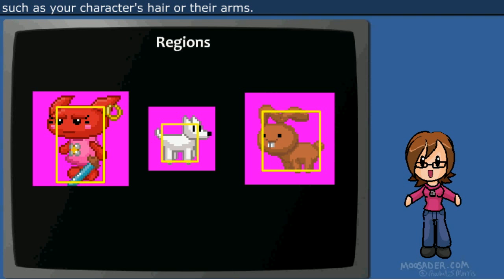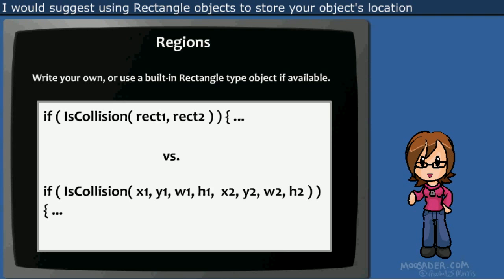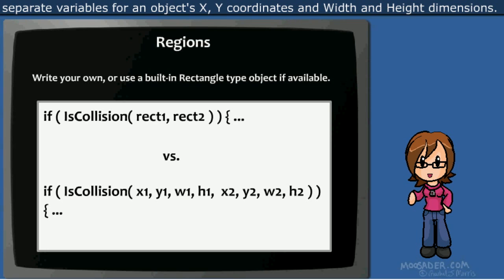I would suggest using rectangle objects to store your object's location as well as their collision regions, rather than storing and passing separate variables for an object's XY coordinates and the width and height dimensions.